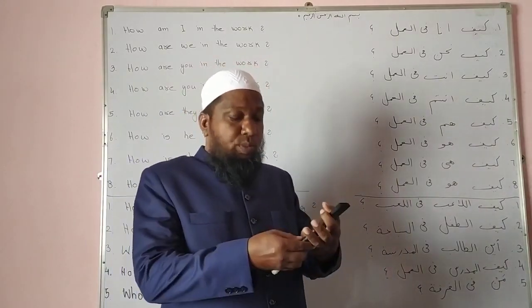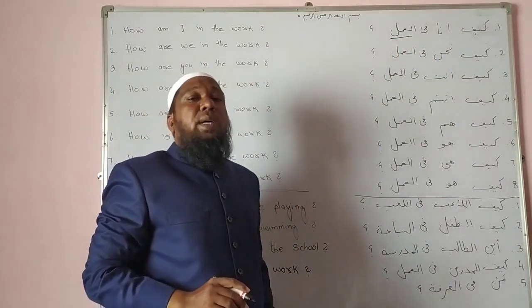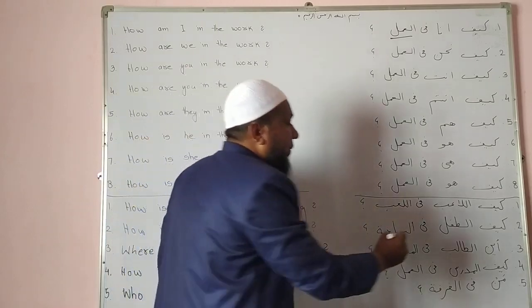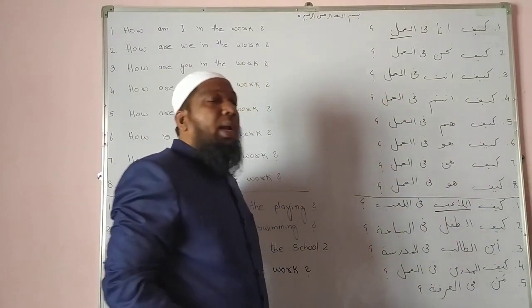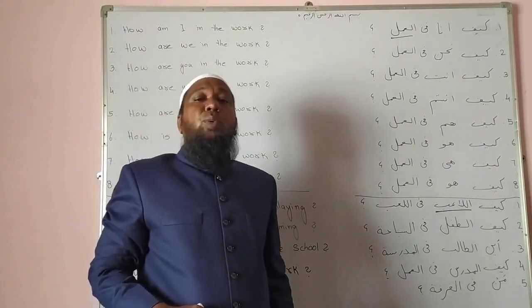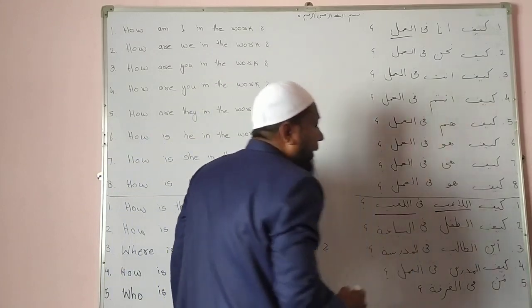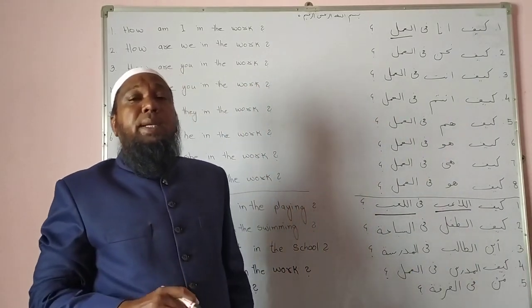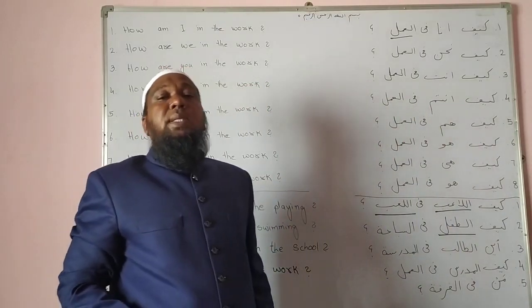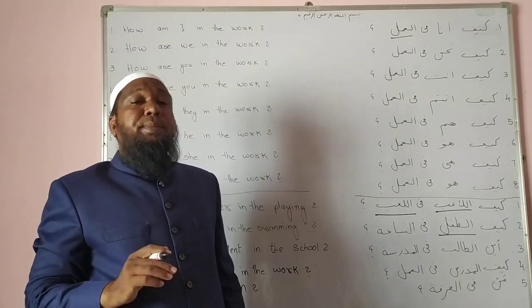So here we have some new words. First: Amal — Work (Kaam), plural Aamal — Works. Laib — Player (Khilari), plural Laiboon — Players. Laib can also mean Playing. Tifl — Child (Baccha), plural Atfal — Children.